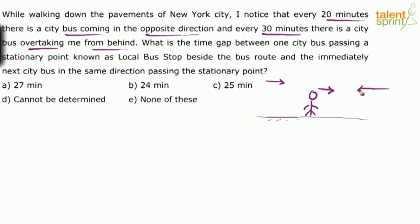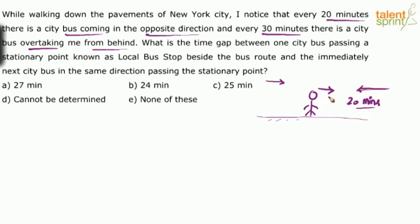As he is moving forward, buses come from the opposite direction every 20 minutes — so the interval is 20 minutes. And every 30 minutes, a bus overtakes him from behind. So there is a bus that overtakes from behind every 30 minutes.